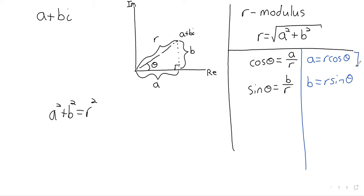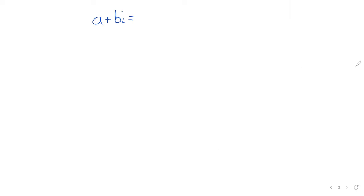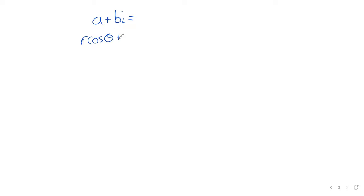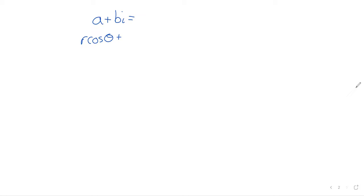This is going to go in for A. Let's put the imaginary unit in front of the sine. We pull an R out.